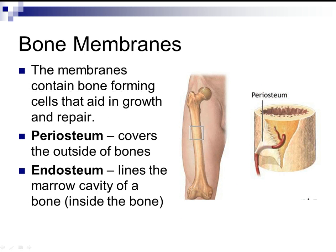Bone membranes contain bone-forming cells that aid in growth and repair. There are two membranes: the periosteum and the endosteum. The periosteum covers the outside of the bones — 'peri' means to surround or cover, 'osteo' means bone. The endosteum lines the marrow cavity inside the bone — 'endo' meaning within, 'osteo' meaning bone.